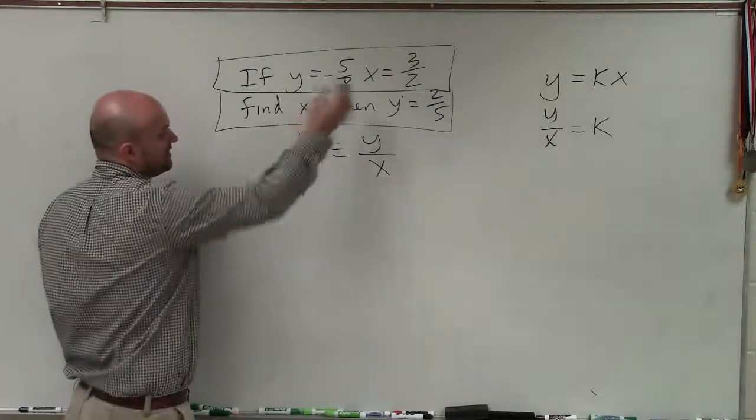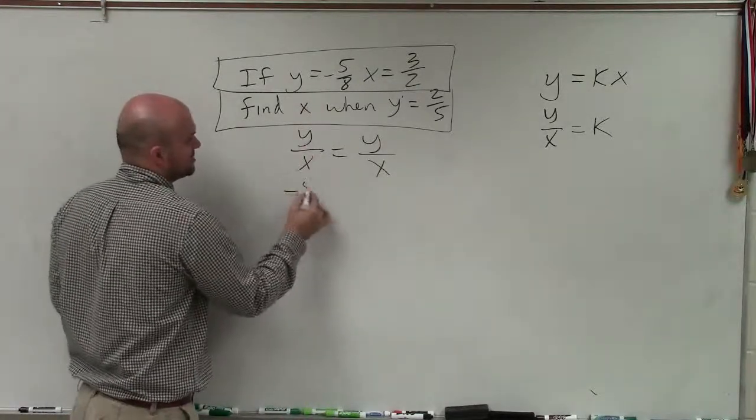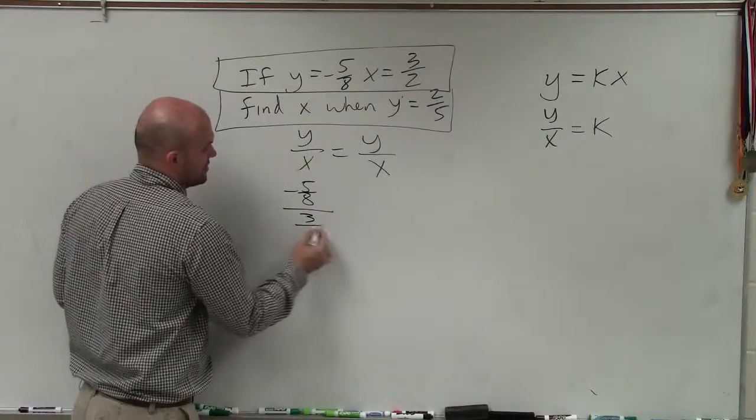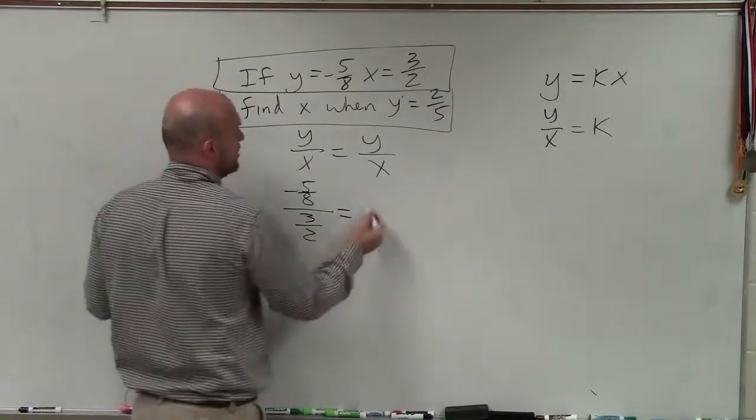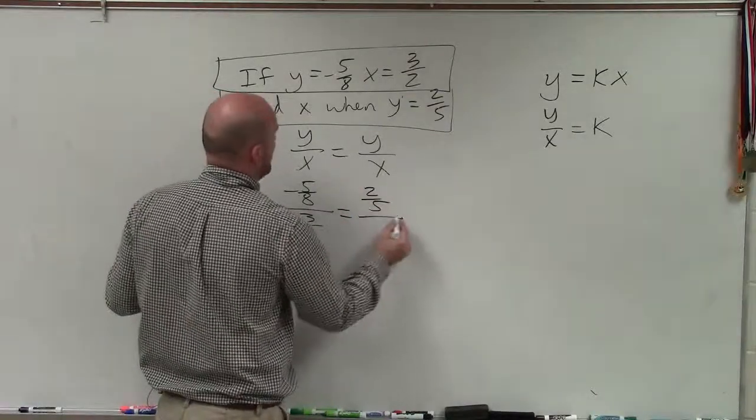Now, all I'm simply going to do is plug in the values that I have. So y equals negative 5 eighths over x, which is 3 halves, is equal to y, which is 2 fifths, over x.